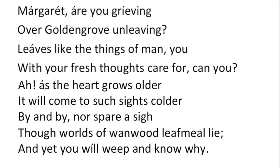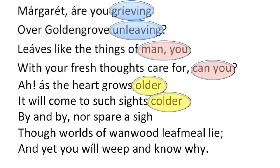I'd like to focus on how Hopkins uses the rhyme scheme to create that change of atmosphere. He starts off with feminine rhymes — 'grieving, unleaving, man you, can you, older and colder' — two-syllable rhymes that help create the rather sentimental atmosphere of the opening lines. And then that's followed by 'sigh, lie, why' — short one-syllable masculine rhymes that signal a different atmosphere in the poem.